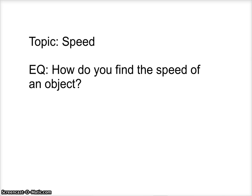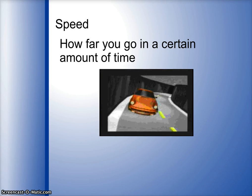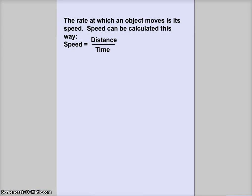How do you find the speed of an object? Speed is how far you go in a certain amount of time. The rate at which an object moves is its speed. Speed can be calculated this way: speed equals distance divided by time.